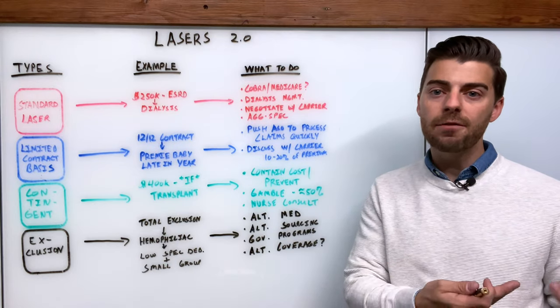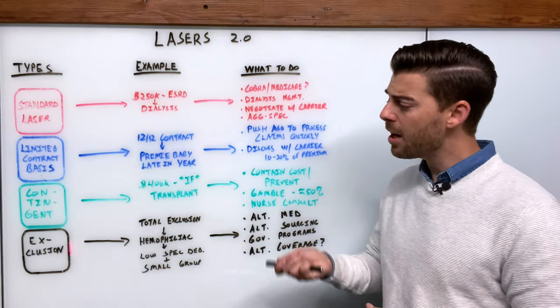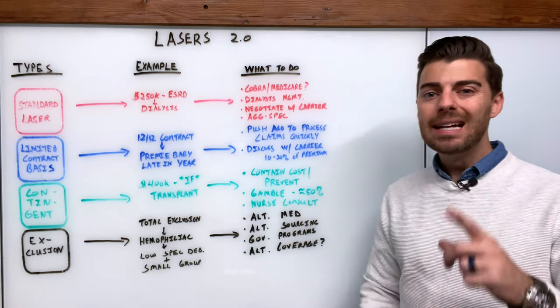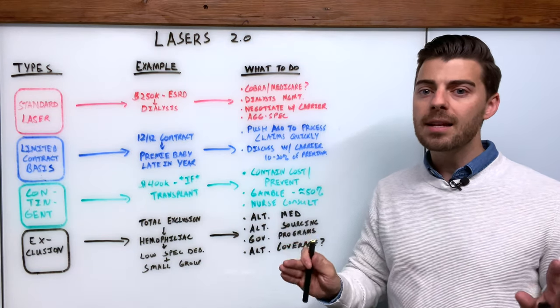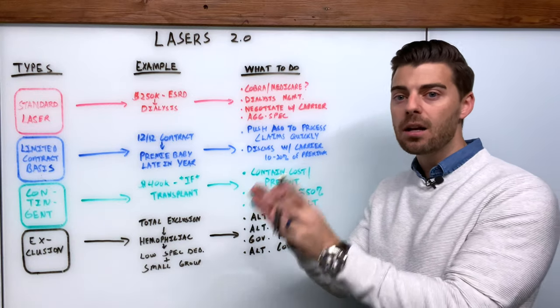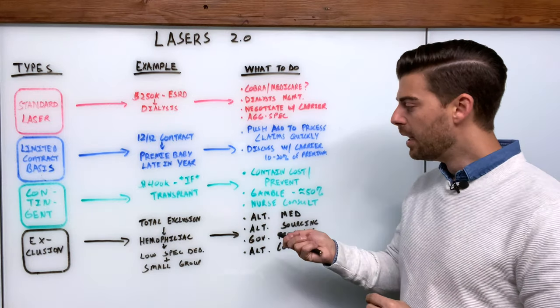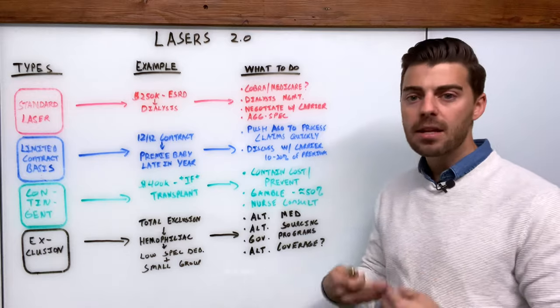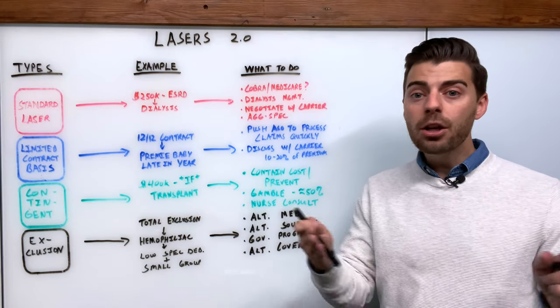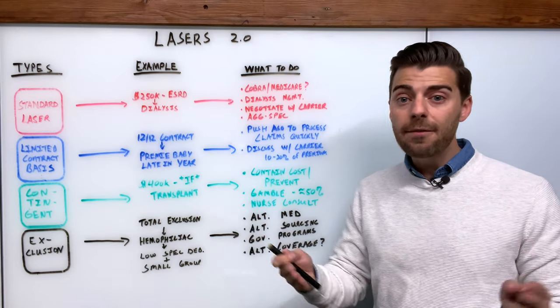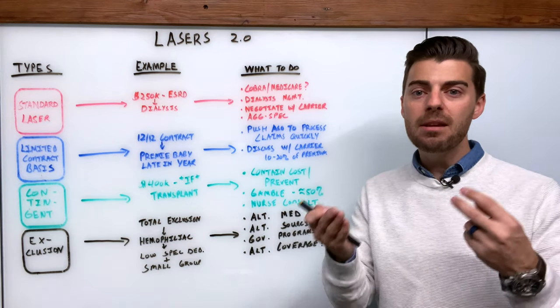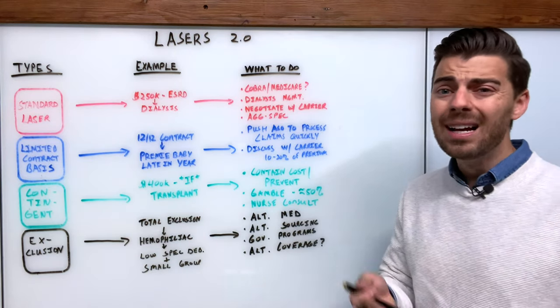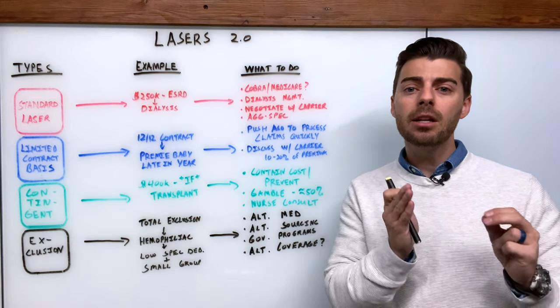Last but not least, the fourth type of laser is an exclusion altogether. That is a total exclusion. There's no dollar amount set aside, that person is simply not covered under the stop-loss policy. So that might happen in the instance of, let's say you have a hemophiliac that has ongoing regular medication for their life. It's very expensive, maybe there's a low spec for the rest of the plan, maybe it's a very small employer as well, and there's realistically nothing the carrier can do to ever write that business profitably if they have to cover this person.